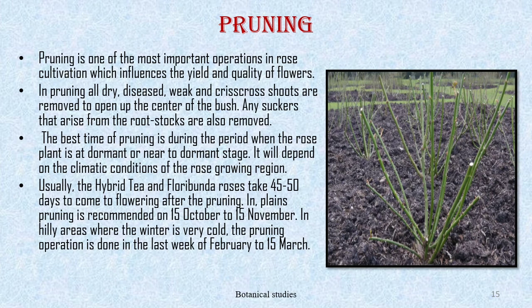Pruning: pruning is the most important operation in rose cultivation and influences the yield and quality of flowers. All dry, diseased, weak, and criss-cross shoots are removed to open up the center of the bush; any suckers arising from the rootstock are also removed. The best time for pruning is when the rose plant is dormant or near dormant, which depends upon climatic conditions. Hybrid tea and floribunda roses take 45 to 50 days to come to flowering after pruning. In plains, pruning is recommended from 15th October to 15th November; in hilly areas where winter is very cold, pruning is done from the first week of February to 15th March.